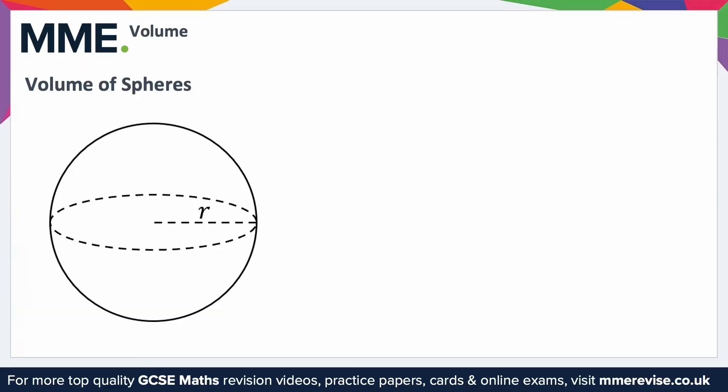A sphere is a 3D shape that has the same radius from its centre to all points on the shaped surface. Which means the only variable to the volume of a sphere is its radius.